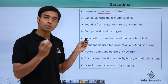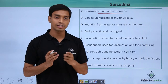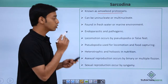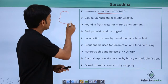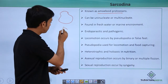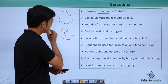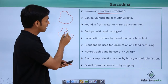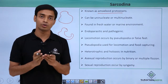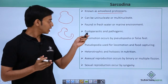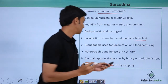The locomotory organ here is pseudopodia, or false feet. If this is a cell, the protoplasm of the cell shows some outgrowths — these extensions are basically the pseudopodia, also called false feet.